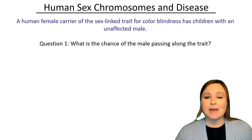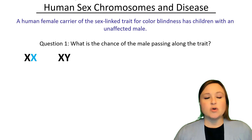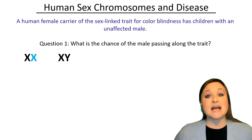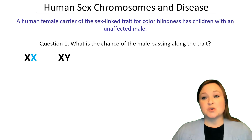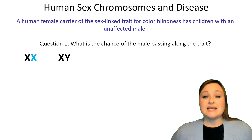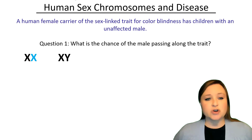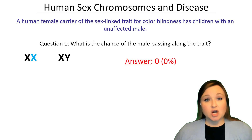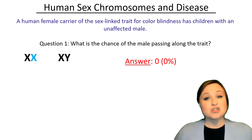So the question is: what is the chance of the male passing along the trait for colorblindness? The human female is a carrier — so she's XX, and we color one of those X's to indicate it has the trait for colorblindness. The male is not colorblind because the question tells us he is unaffected. The male is XY and his X shows the normal allele for vision. So he's XY and doesn't have the trait for colorblindness. What's the chance of the male passing along the trait? Zero — there's a zero percent chance that the male could pass along the trait because his X doesn't have the trait for colorblindness.